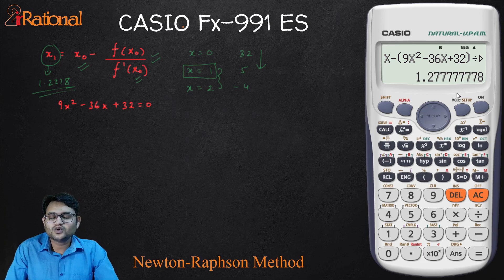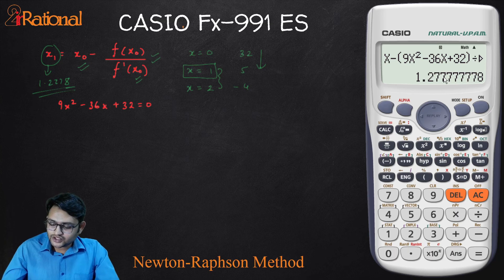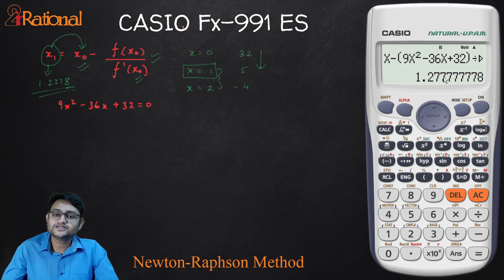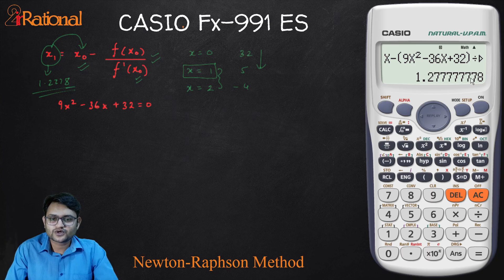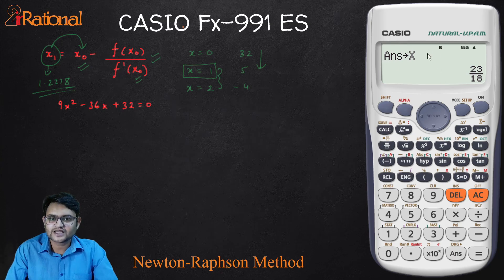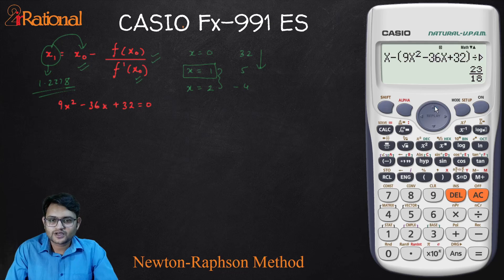Now I want a closer value. This might not actually be very close to the actual answer. Now I can use this x1 instead of x0 to find the next iterative value. Instead of writing all of the equations again, I can use the previous equations. So what I will do is I will store this value and say shift RCL and x. It says answer has been stored in x. And I will go up. And this is my equation. I will press equal to.